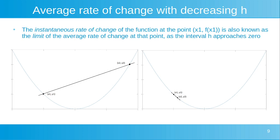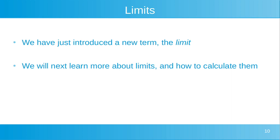The instantaneous rate of change of the function at the point x1, f(x1) is also known as the limit of the average rate of change at that point as the interval h approaches zero. So what we're going to do now is talk a lot more about the limit — what a limit is and try to understand the theory of that a little bit more. We're next going to learn more about limits and how to calculate them.